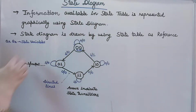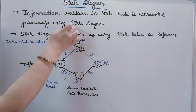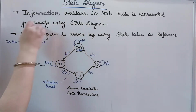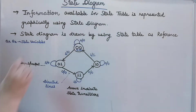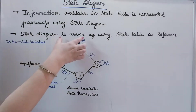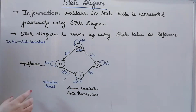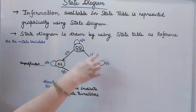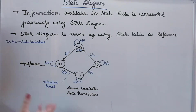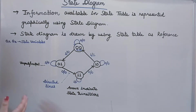The information which is available in the state table, if we have to represent it graphically, we need a state diagram. So a state diagram is graphically represented through a state table. State diagram is drawn by using a state table as a reference. It means if I need to draw a state diagram, I need a state table as my reference.